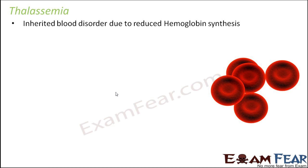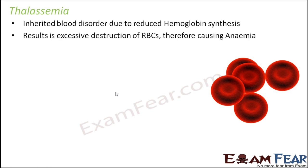What goes wrong in thalassemia? Sufficient amount of hemoglobin is not synthesized, so sufficient oxygen will not get transmitted and will not reach different parts of the body. If different body parts do not receive enough oxygen, they will not be able to perform properly. As a result of this reduced hemoglobin synthesis, there is excessive destruction of RBCs, therefore causing anemia.